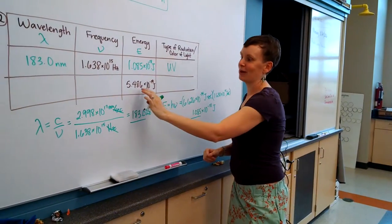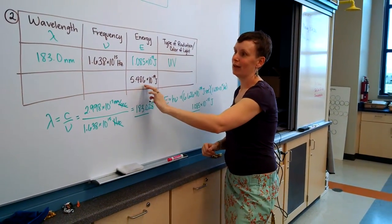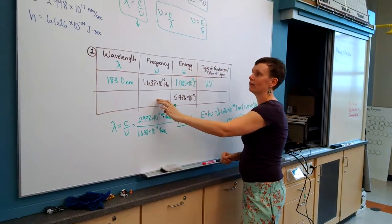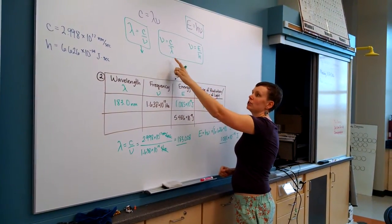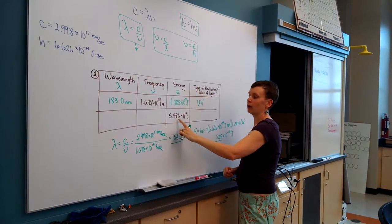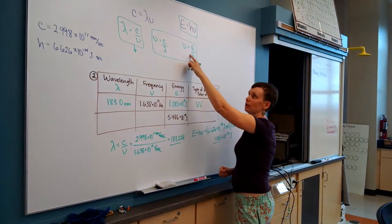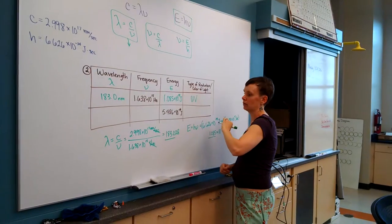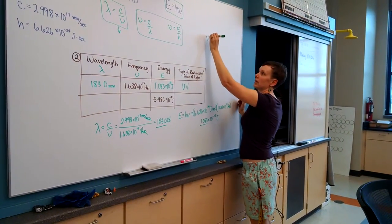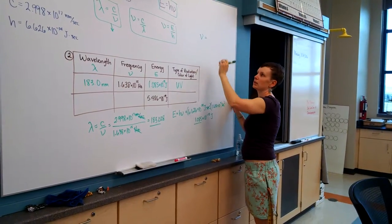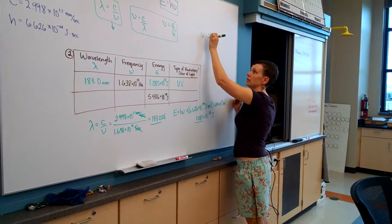Next one. When you're given just energy, we have to work backwards, so we're going to try and find frequency first. When trying to decide which equation to use, you look at what you have. We have energy, so I'm going to use this equation because that has energy in it. I'm going to show my work over here for this one. Frequency for this second line of the table is going to equal the energy over Planck's constant.